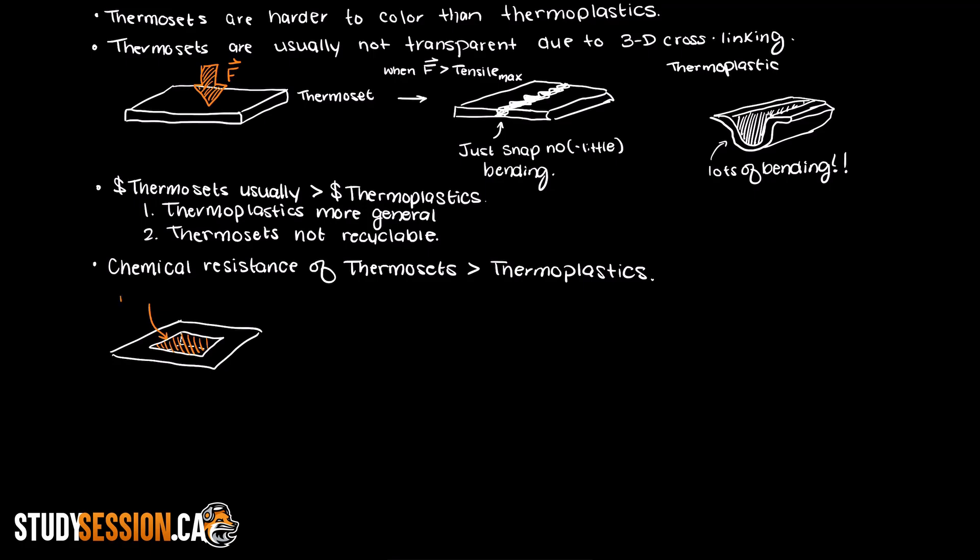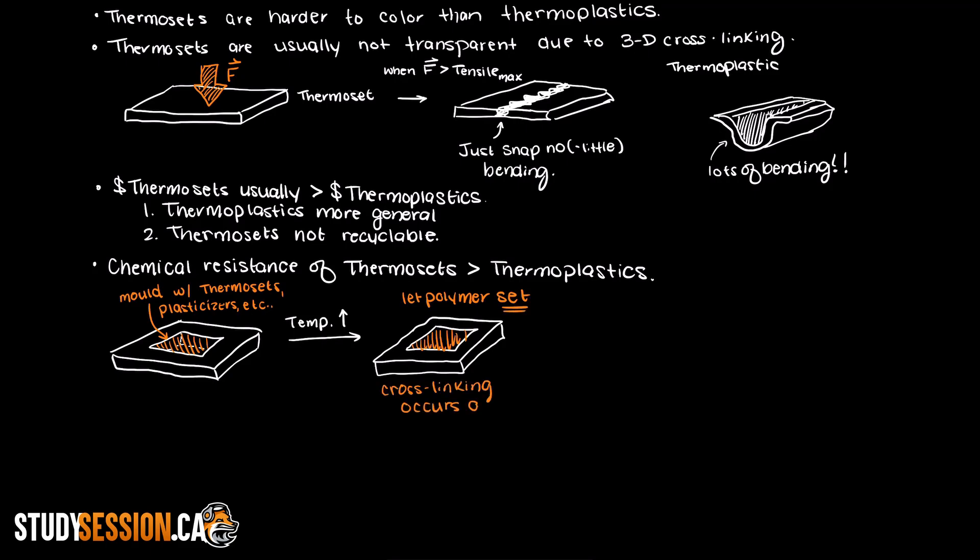Thermosets are usually created by adding all the polymers, plasticizers, and additives together and then brought to a high temperature in a mold that we will need them in. Then we set the polymer by letting it cool. It is during this cooling stage, or setting, that the crosslinking between the polymer occurs. We will go more into depth about this process in a future video though.